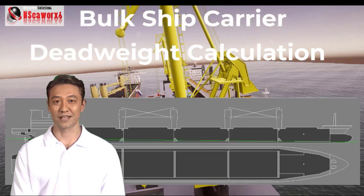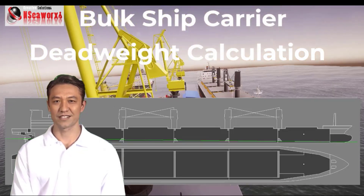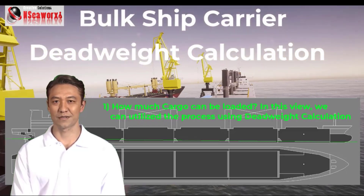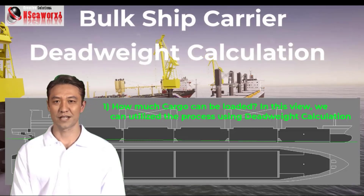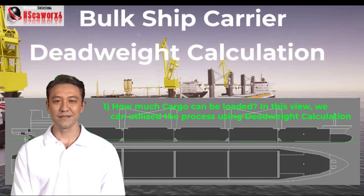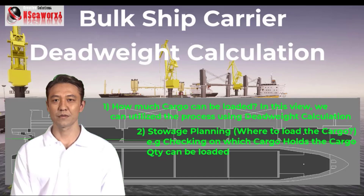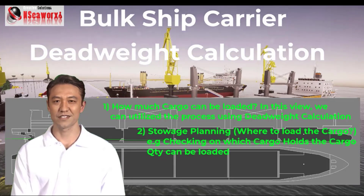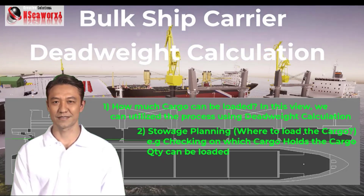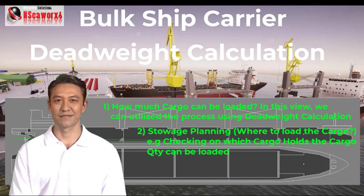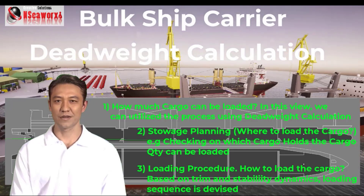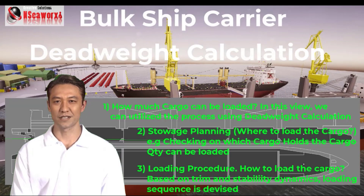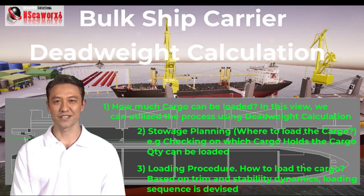First, let's clear out the basic principles applied in loading cargo. These are the steps of loading as follows. Number one: how much cargo can be loaded? In this view, we can utilize the process using deadweight calculations. Number two: stowage planning — where to load the cargo. For example, checking on which cargo holds the cargo quantity can be loaded. Number three: loading procedure — how to load the cargo, based on trim and stability dynamics, the loading sequence is devised. Now let's focus first on step one.